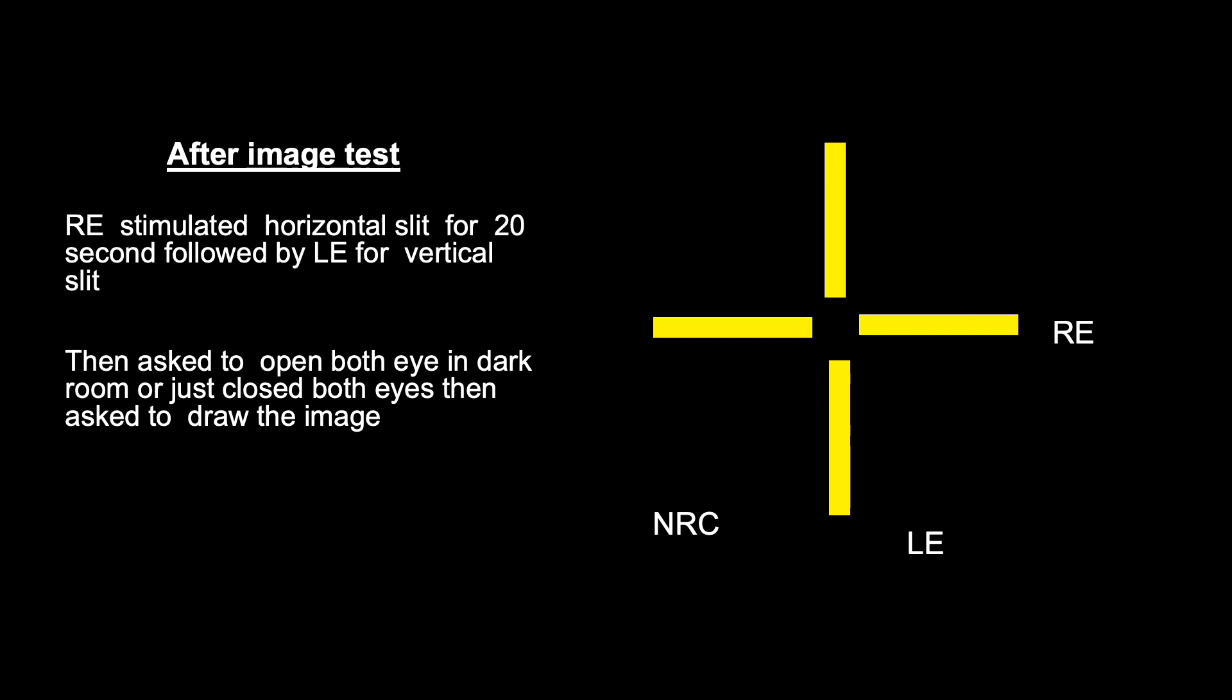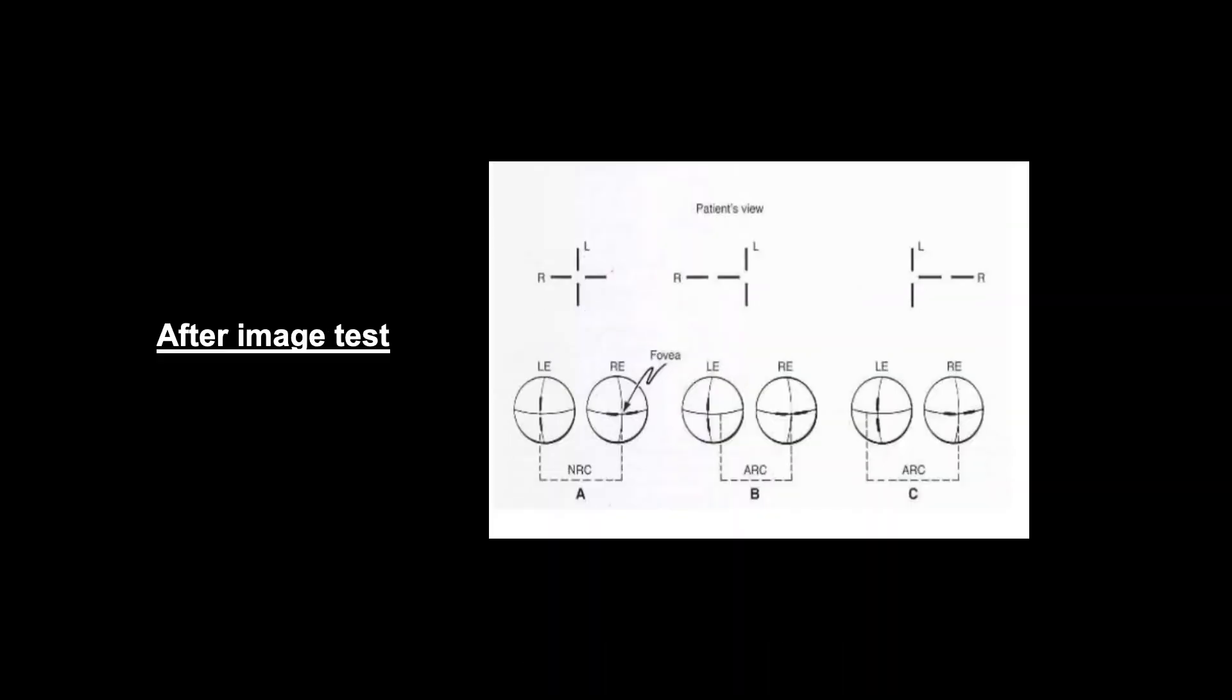Then make the optically induced strabismus by placing the prism where they find the same image because of normal retinal correspondence. Here we are not able to demonstrate the abnormal retinal correspondence.